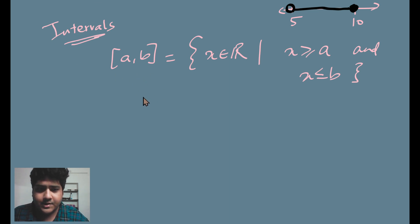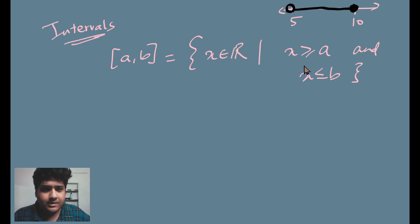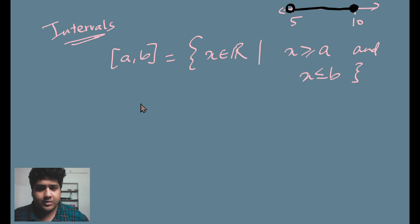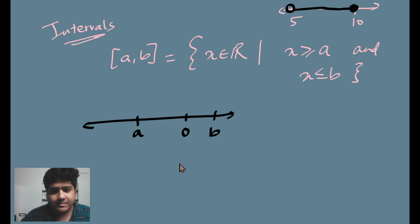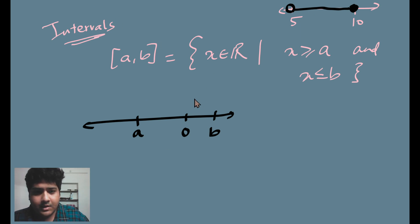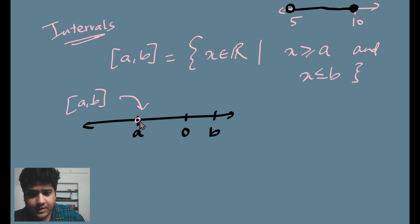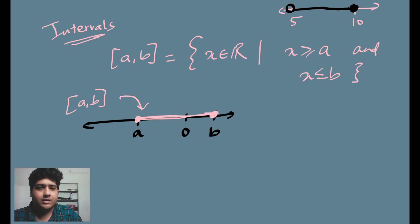We have other notations for when A and B are not included, but for now let us consider this case. This is a multiple-condition property: X belongs to R, X has to be greater than or equal to A, and X has to be less than or equal to B. On a number line, with A perhaps negative and B positive, the set [a, b] includes A, includes B, and all real numbers in between.